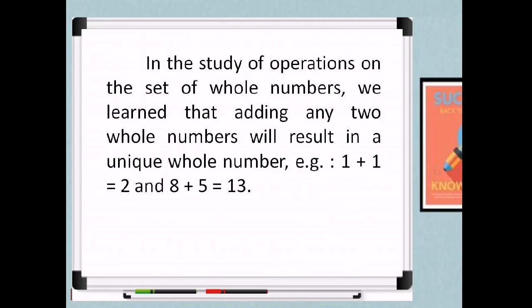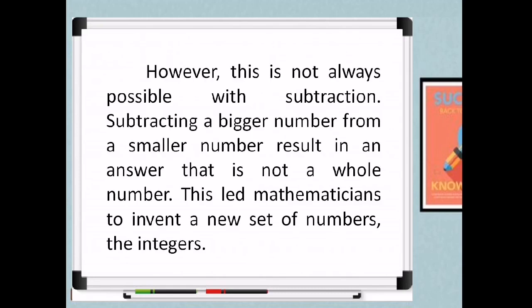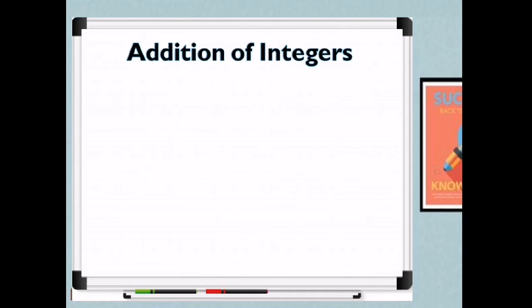These are drills practiced during elementary days — adding and subtracting whole numbers. However, this is not always possible with subtraction. Subtracting a bigger number from a smaller number results in an answer that is not a whole number. This led mathematicians to invent a new set of numbers: the integers, consisting of positive numbers, zero, and negative numbers. That will be our focus for today.